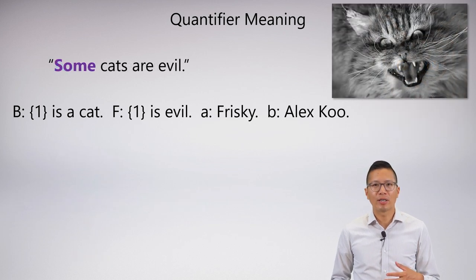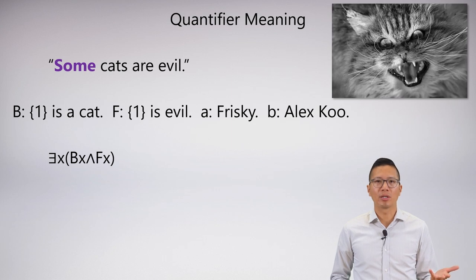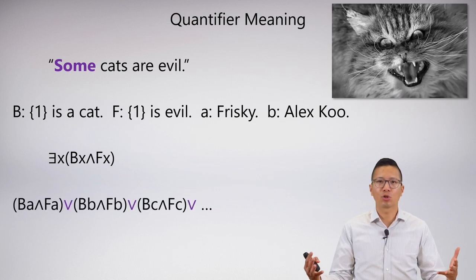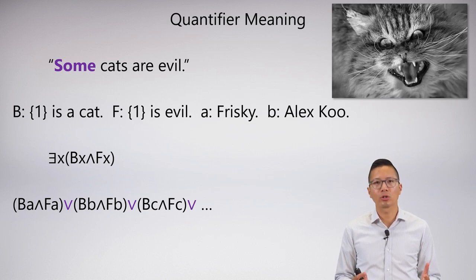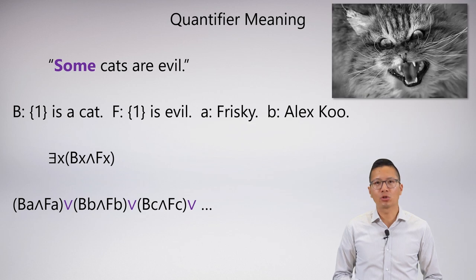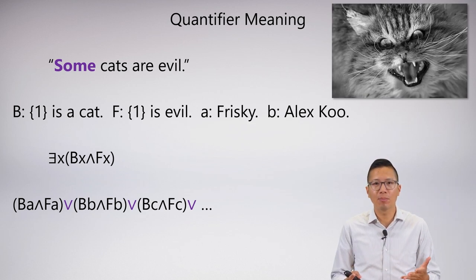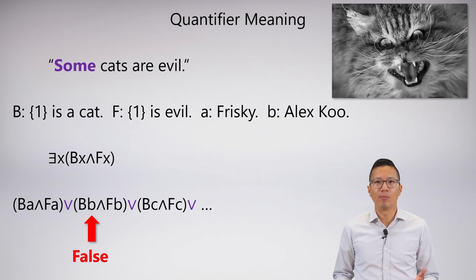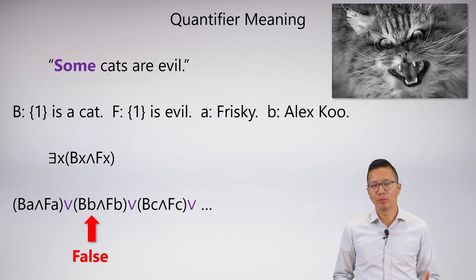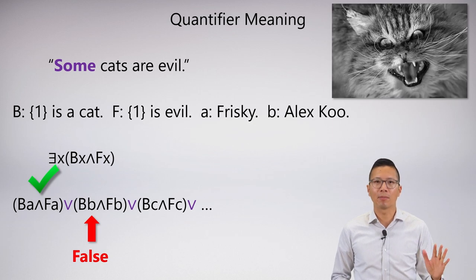For the existential, if I say 'some cats are evil,' I do the exact same breakdown. I know it's 'there exists an x, Bx and Fx,' and I get this string. Except notice that it's not conjunctions — these are disjunctions. Because what it means to say 'some cats are evil' is at least one of these disjuncts is true. At least one thing in my universe, when substituted into the statement, satisfies this. So it's not a problem that Alex Koo is not a cat and makes this disjunct false, because somewhere else something is a cat and is evil — Frisky, my evil cat. So that first disjunct is true and everything makes sense.